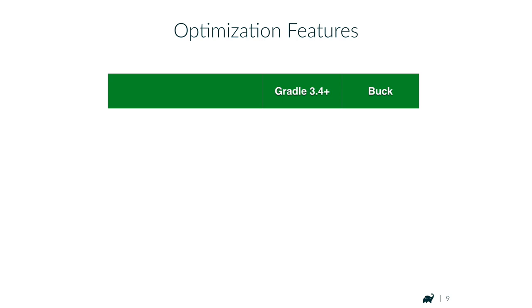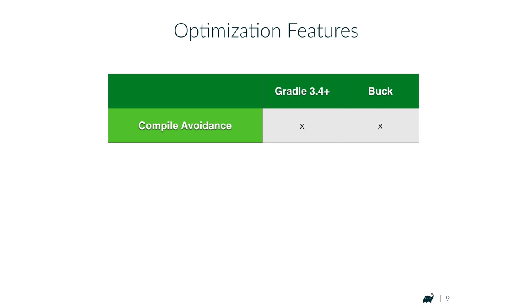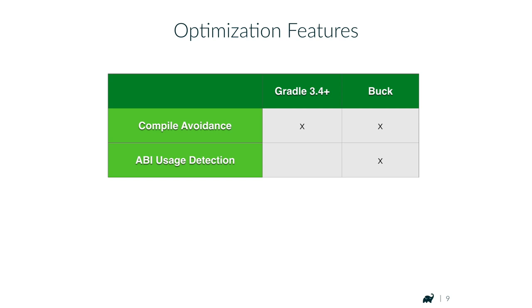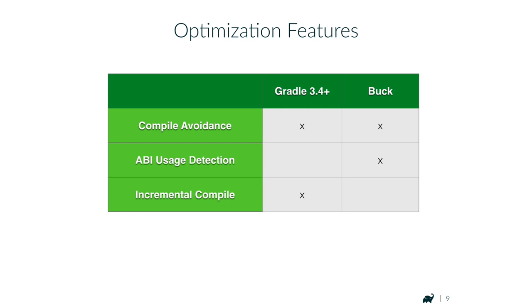End of January, Gotam from Uber was presenting on how to have fast Android builds with OKBuck. It helps to understand where Gradle and Buck are when it comes to providing these optimizations. Compile avoidance is provided by both build tools — Gradle has a very efficient implementation using memory caches. ABI usage detection as a separate feature is, at this point, only provided by Buck. Incremental compile is something only Gradle provides.